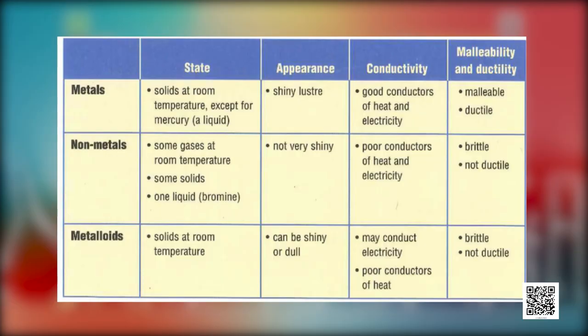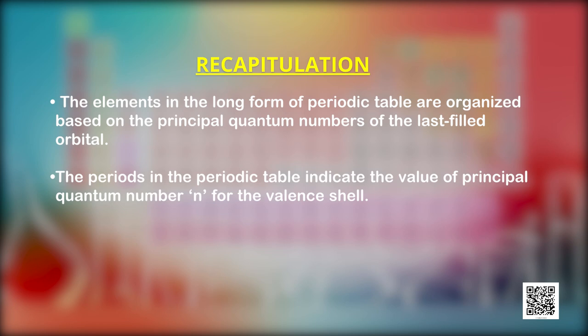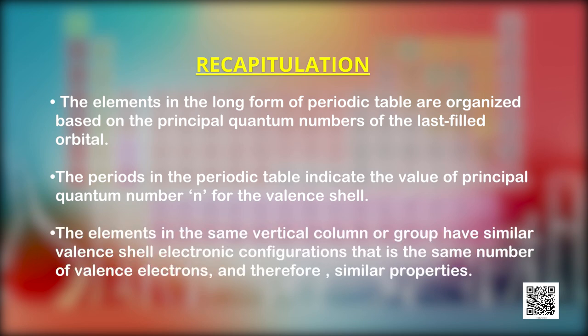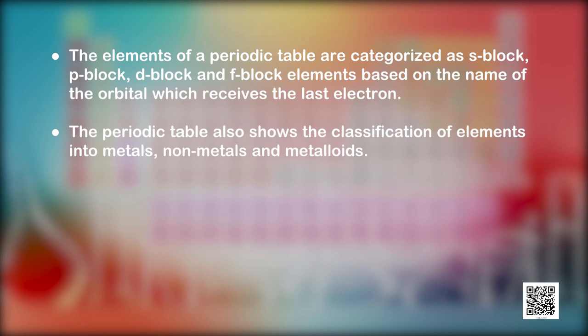Elements that show properties characteristic of both metals and nonmetals are called semi-metals or metalloids. To conclude, the elements in the long form of the periodic table are organized based on the principal quantum numbers of the last filled orbital. Periods indicate the value of principal quantum number n for the valence shell. Elements in the same vertical column or group have similar valence shell electronic configurations — the same number of valence electrons — and therefore similar properties. Elements are categorized as s-block, p-block, d-block, and f-block, and also as metals, nonmetals, and metalloids.